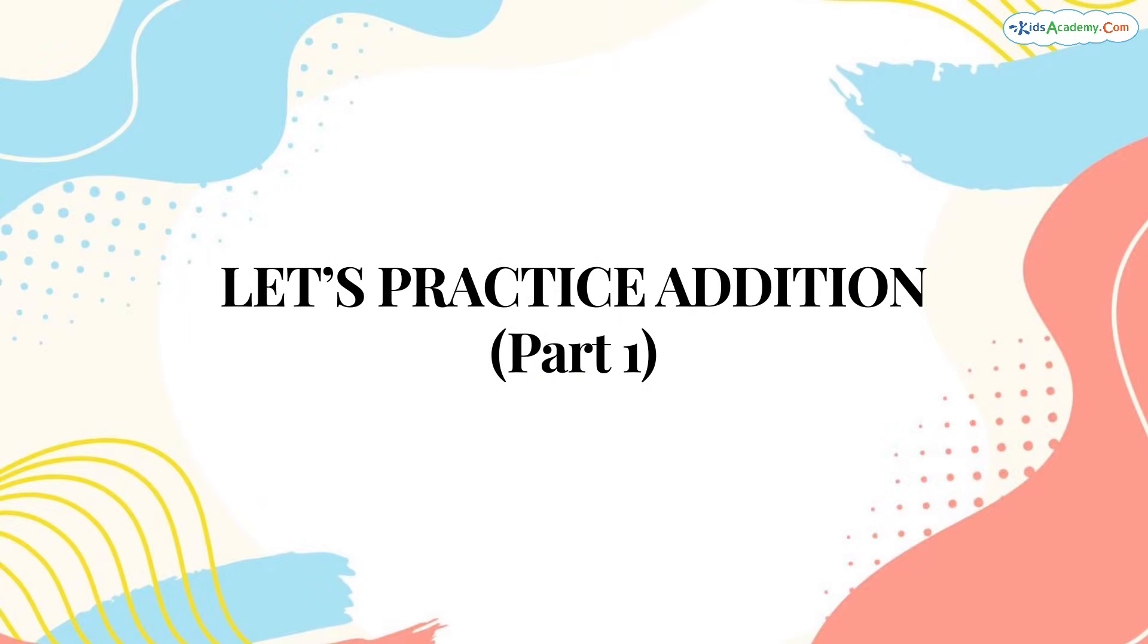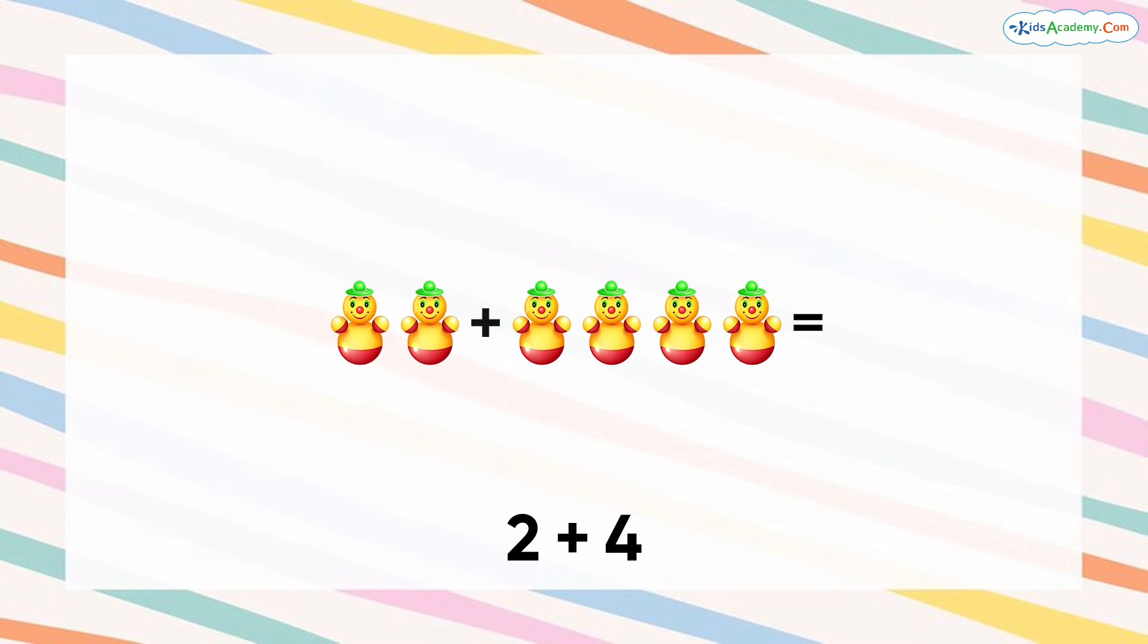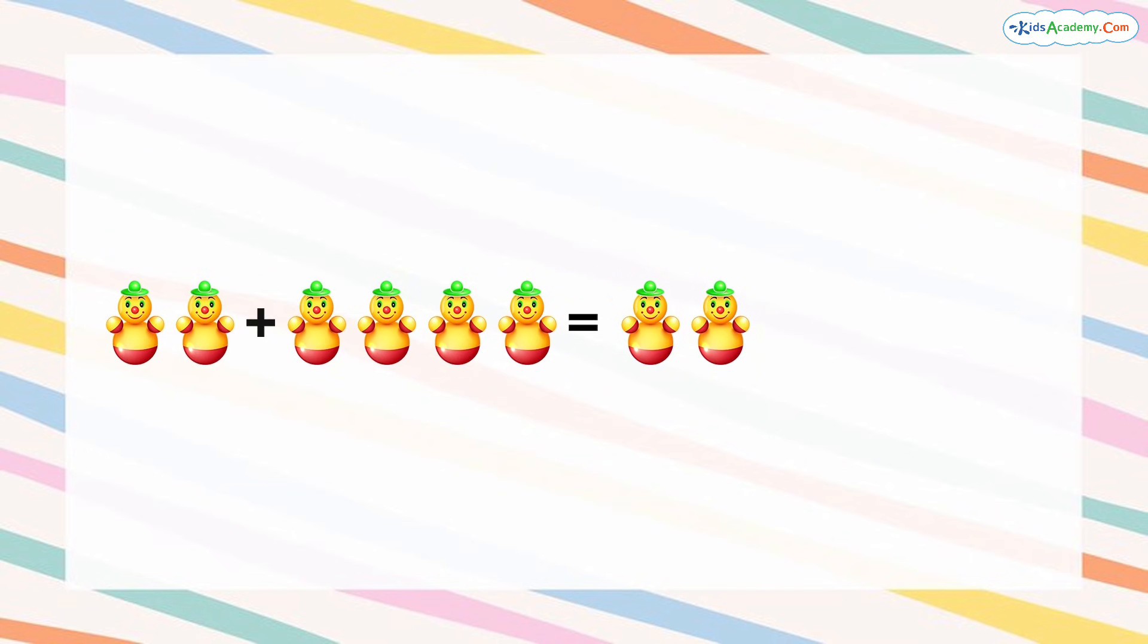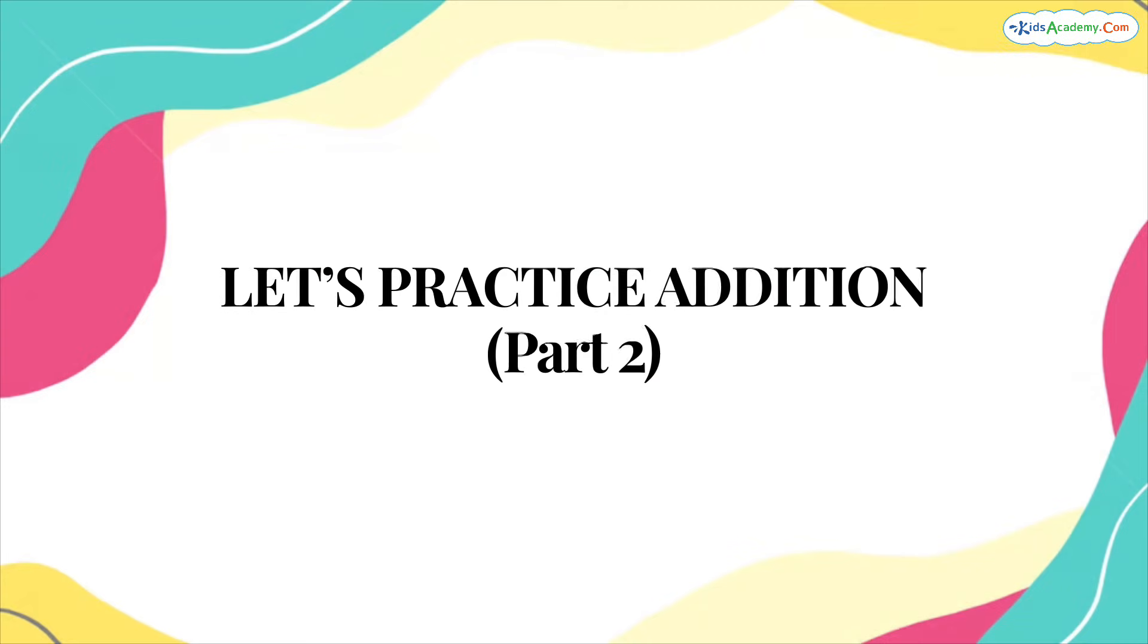Now let's practice together. Here's a problem for you. What is 2 plus 4? Let's use pictures to help us. First, count two objects. Now add four more objects. How many do we have now? Let's count together. 1, 2, 3, 4, 5, 6. That's right, 2 plus 4 equals 6. Great job! You're doing amazing!